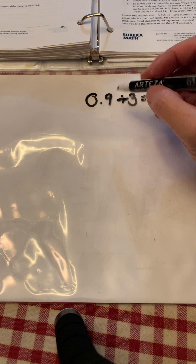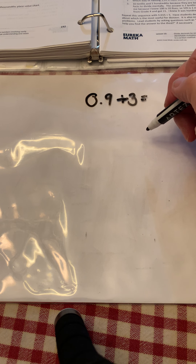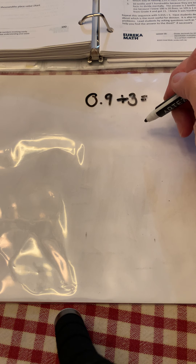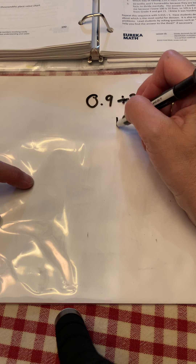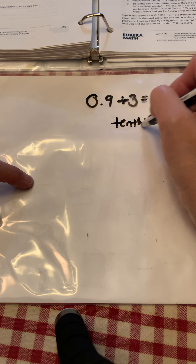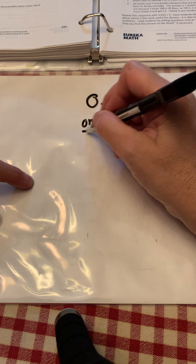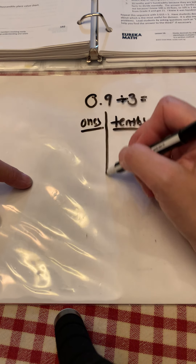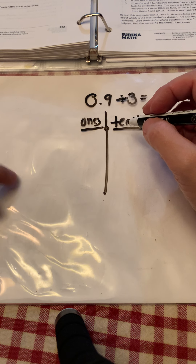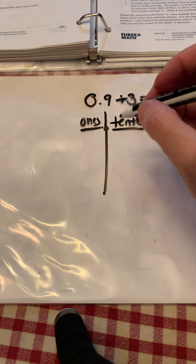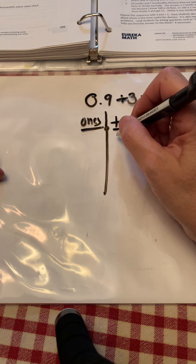Okay, welcome back. We're going to do 9 tenths divided by 3. The first thing we're going to do is make a place value chart. I'm going to need tenths, I'm going to need ones at the very least, and we're going to start with 9 tenths. So we're going to draw 9 tenths on our place value chart.